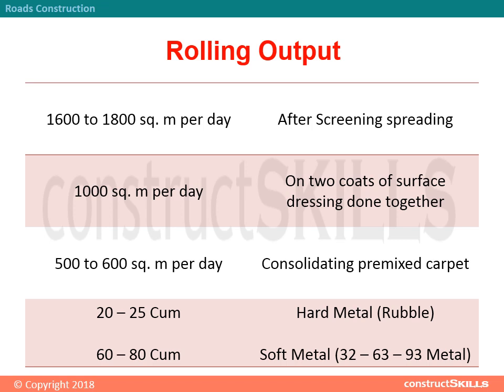In the case of two coats of surface dressing done together, rolling output is 1,000 square meters per day. In the case of consolidating pre-mixed carpet, rolling output is 500 to 600 square meters per day. In the case of hard metal rubble, rolling output is 20 to 25 cubic meters. In the case of soft metal, rolling output is 60 to 80 cubic meters.